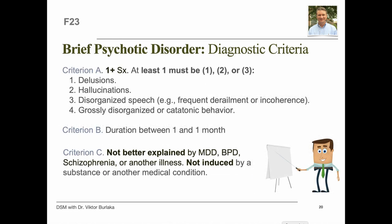For the diagnostic criteria for brief psychotic disorder, Criterion A requires one or more of the following — delusions, hallucinations, disorganized speech, and grossly disorganized or catatonic behavior — with at least one being delusions, hallucinations, or disorganized speech. Criterion B states that the episode lasts at least one day but less than one month, with eventual full return to premorbid functioning. Criterion C states the disturbance is not better explained by major depressive or bipolar disorder with psychotic features, another psychotic disorder such as schizophrenia or catatonia, or the physiological effects of drugs, medication, or another medical condition.